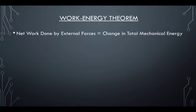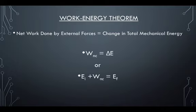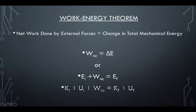The work energy theorem is that the net work done by external forces equals the change in total mechanical energy, or WNC equals delta E. Or we can write this as the initial mechanical energy plus work done by non-conservative forces equals the final energy. And sometimes that work done by non-conservative forces is going to be negative, which of course means that we'll end up with less energy than we started with.